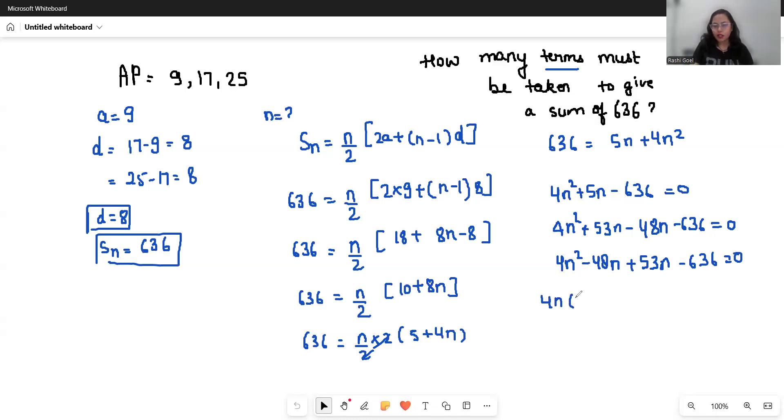If I take 4n as common, n minus 12, and now if I take 53 as common, n minus 12 equals 0. Now 4n plus 53 and n minus 12 equals 0. So n equals minus 53 by 4, and here n equals 12.